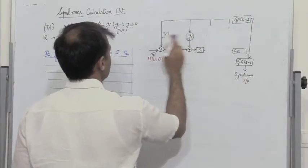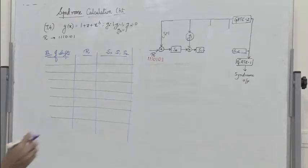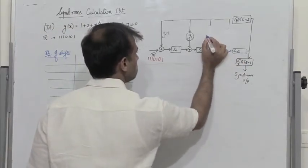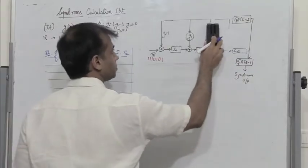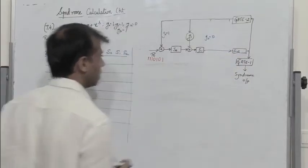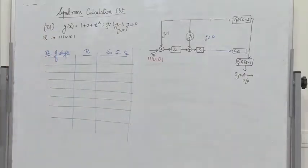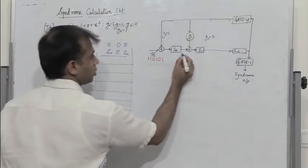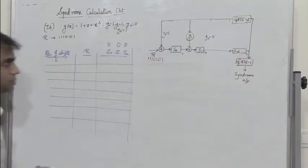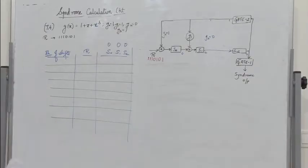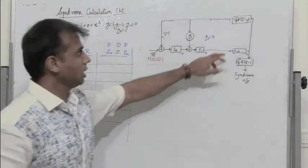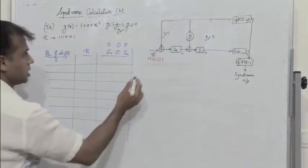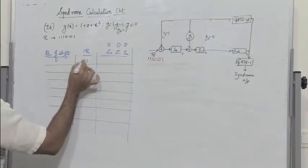G0 is 1, so there is a connection. G1 is 1, so there is a connection. G2 is 0, so there is no connection — the output of S1 is connected directly to the input of S2. Initially, we assume the outputs of flip-flops S0, S1, and S2 are all 0. The received vector is fed to the syndrome calculation circuit. During shift 1, the first bit entering is 1; with the feedback being 0, we get 1 XOR 0 = 1 as the input of S0, and S1 and S2 remain 0.